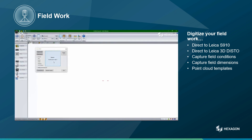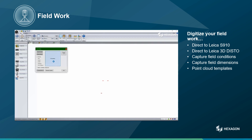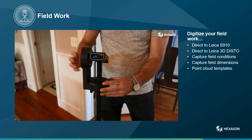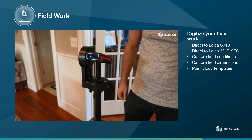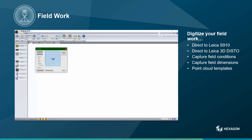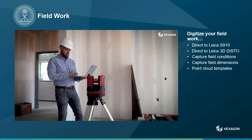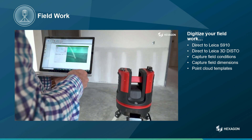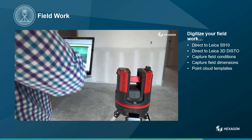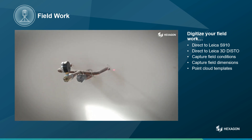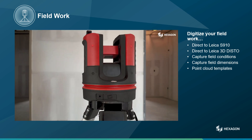CabinetVision's Leica utility is an easy-to-use component that will walk you through each point measurement to take in the room. With the S910, simply point the laser at the desired location, then click on the button in CabinetVision to take that measurement. If it is the more advanced robotic 3D Disto, you can control the device using the Leica utility with the ability to see on the screen where the laser is pointed and move the device by dragging the mouse. The utility will take you step by step through each measurement in the room.